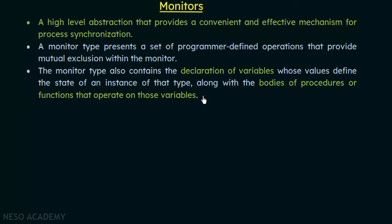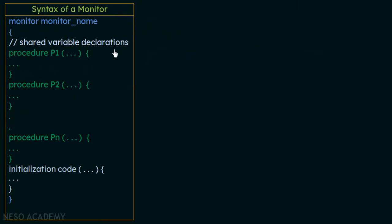Looking at the syntax of a monitor: the monitor is defined as an abstract data type named 'monitor', given a monitor name. Inside we have the shared variables declaration — variables shared between different processes. We also have procedures P1, P2, up to Pn — any number of procedures — which are operations performed on the shared variables. Finally, there is initialization code to initialize the variables.